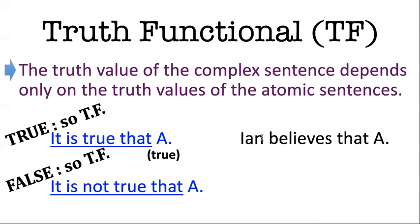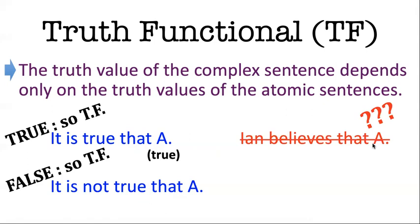The contrast is with 'Ian believes that A.' If you know that A is true, can you know whether Ian believes that A is true? The answer is no — I'm not omniscient. Just because A is true, you can't know whether Ian believes it or not. You have to know other things: for example, what A means. Does A mean 'Alberto is guilty'? Whether Alberto is guilty is one thing; whether Ian believes it is something else. You also have to know something about Ian's psychology. So the truth value of this complex sentence is not determined just by the truth value of A.